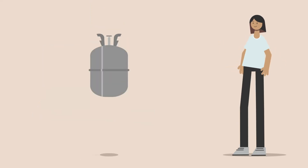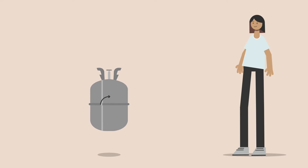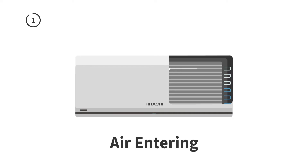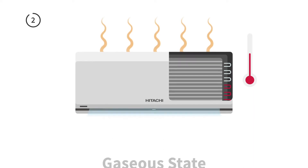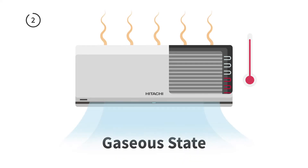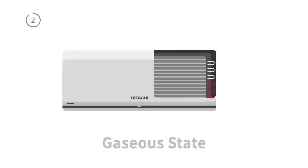We are going to keep track of what is called the refrigerant. Step 1: the refrigerant flows through the evaporator coil, absorbing heat from the air inside your home. Step 2: as the refrigerant's temperature rises, it changes from a liquid to a gaseous state, moving to the compressor in the outdoor unit.